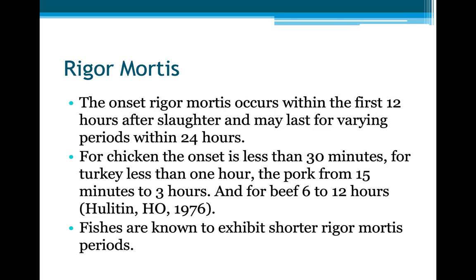For chicken, the onset of rigor mortis is less than 30 minutes. For turkey, less than an hour. In the case of pork, 15 minutes to 3 hours. And for beef, 6 to 12 hours. Fish are known to exhibit a shorter rigor mortis period.